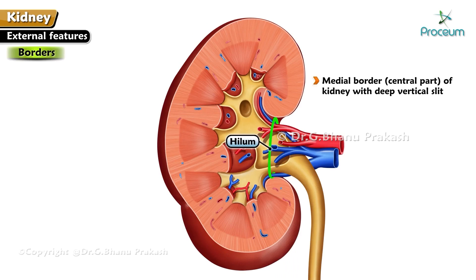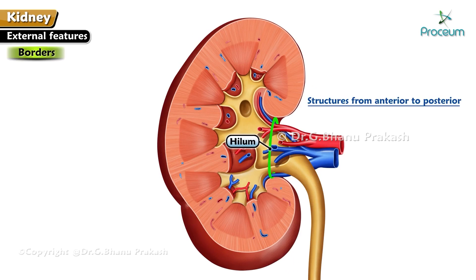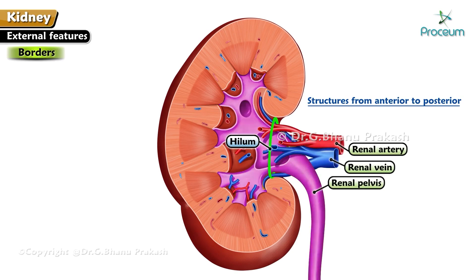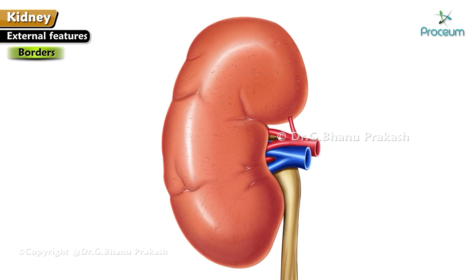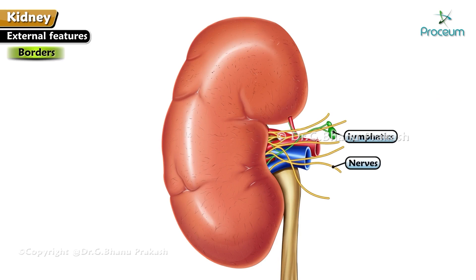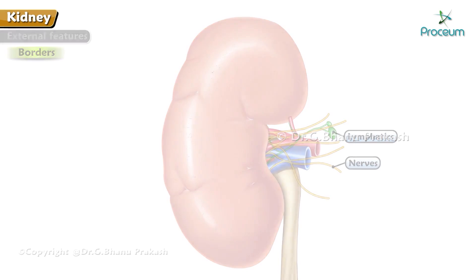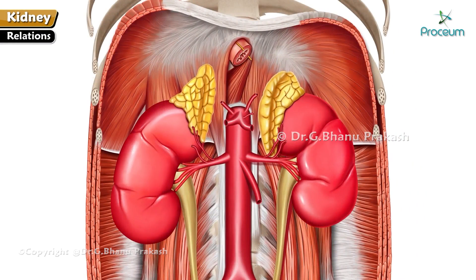The hilum is the central part of the kidney with a deep vertical slit. It transmits the following structures from anterior to posterior: renal vein, renal artery, renal pelvis, and subsidiary branch of renal artery. In addition, the hilum also transmits lymphatics and sympathetic nerves.